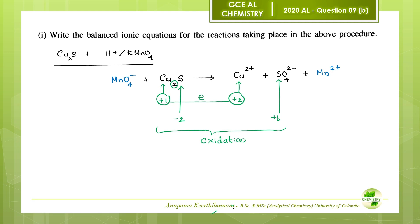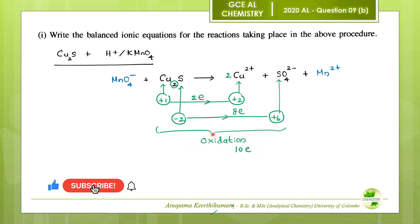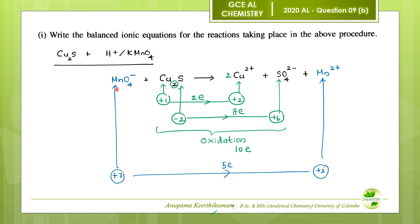Balance the number of copper atoms first. When 2 Cu⁺ ions oxidize to 2 Cu²⁺ ions, 2 electrons are released. When 1 sulfide ion oxidizes to sulfate, 8 electrons are released. So the total electrons from oxidation are 2 + 8 = 10 electrons. For reduction, when 1 permanganate ion reduces to Mn²⁺, it gains 5 electrons, so the reduction half involves 5 electrons.